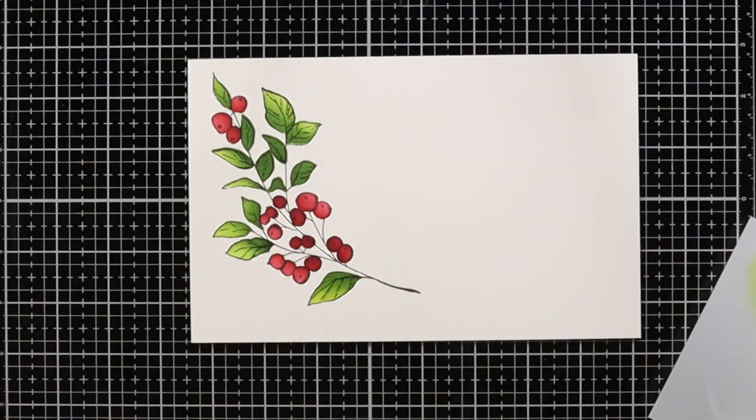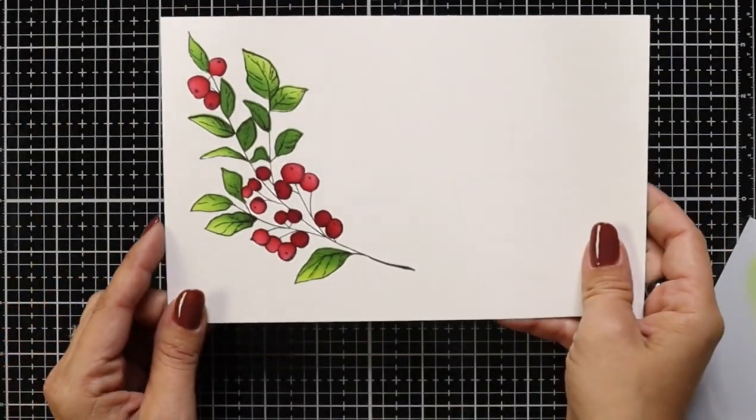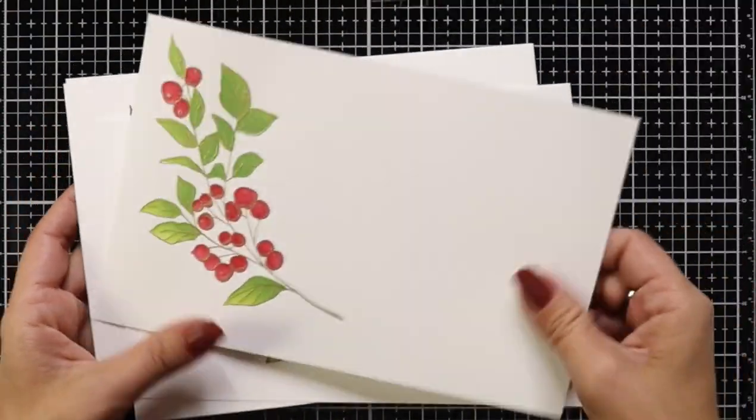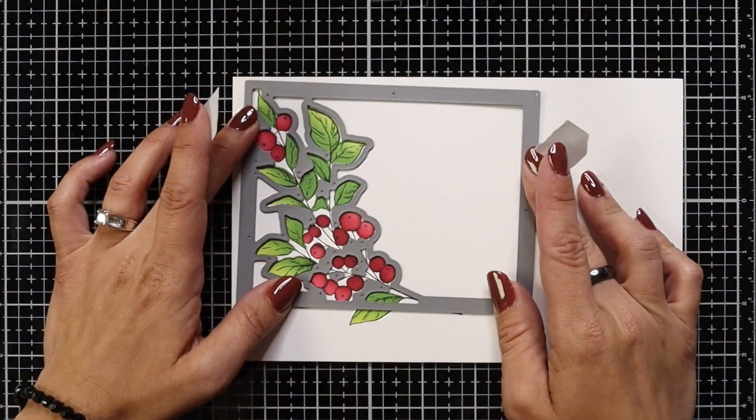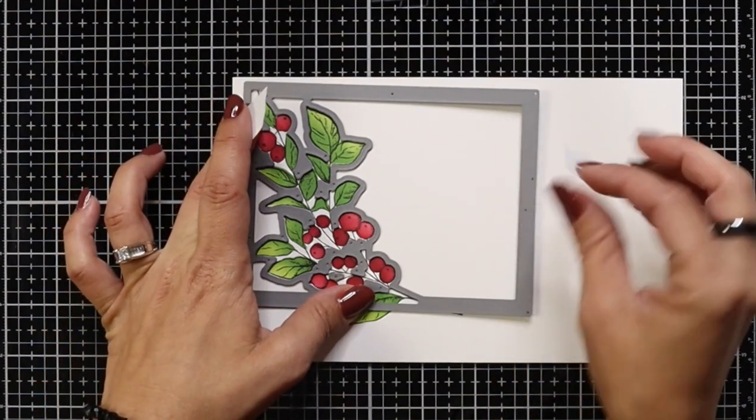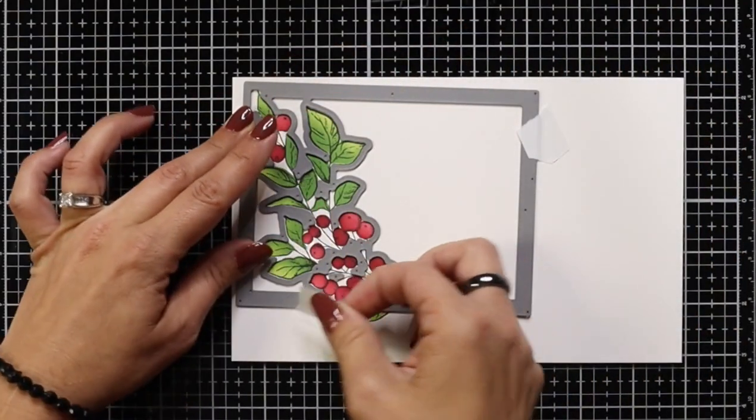So after I have a bunch of these done, and like I said, this went by really quick, I'm going to start working on some die cutting. So I'm going to take that matching die, line it up over my area, hold it in place with post-it tape and run that through my die cut machine. And I'll do that for all of the ones that I had stamped and ink blended.